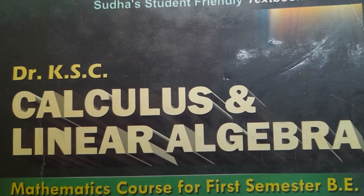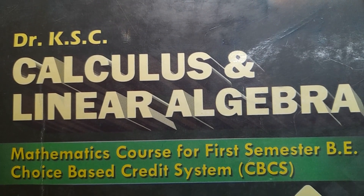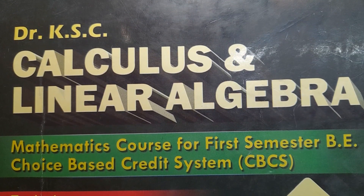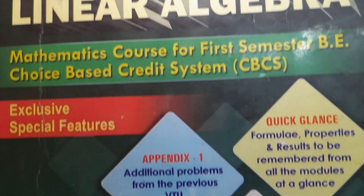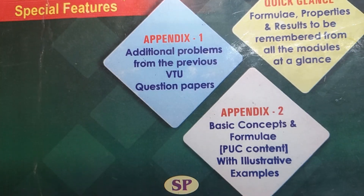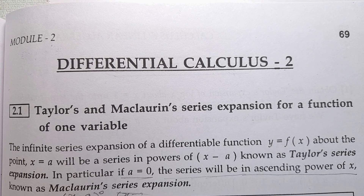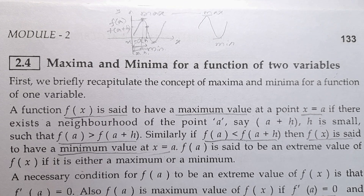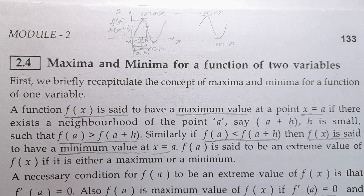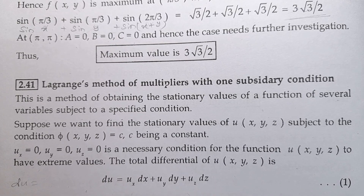Subject: Engineering Mathematics for First Semester BE. Book Author: Dr. K.S.C. Sir. Module 2: Differential Calculus 2. Article No. 2.4: Maxima and Minima for a Function of Two Variables. Sub-Article No. 2.41: Lagrange's Method of Multipliers with One Subsidiary Condition.